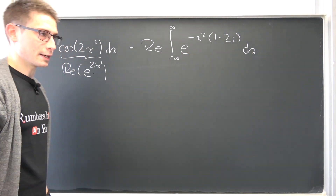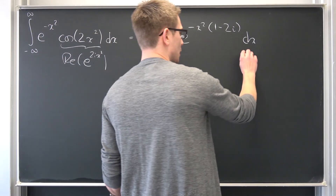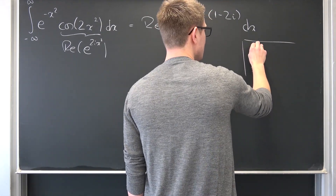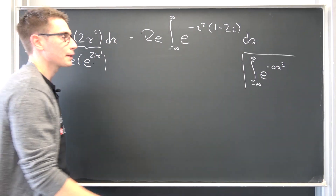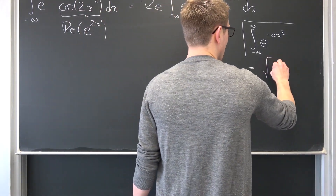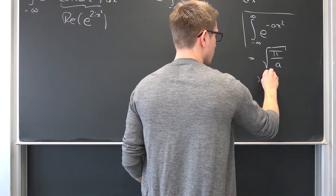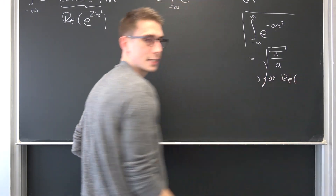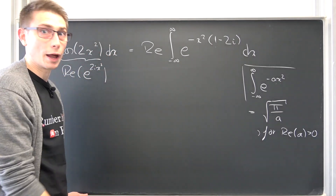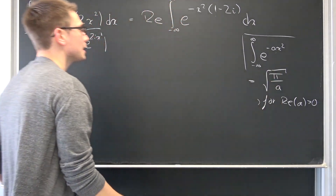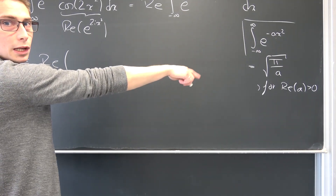Now we are going to have this thing right here. Here's one cool fact: I have derived the Gaussian integral before, even the generalized version. If we take a look at the Gaussian integral from negative infinity to infinity of e to the negative a x squared, where a is a complex number — namely 1 minus 2i — then we can evaluate this to be the square root of pi over a. And this works if the real part of a is greater than 0.